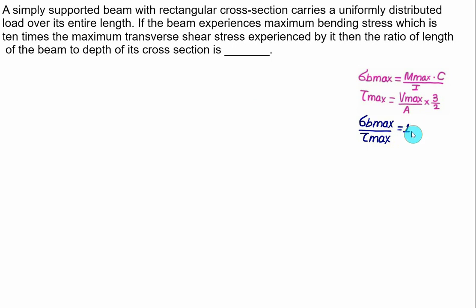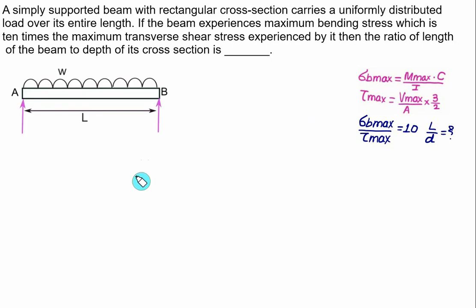This ratio is known and we have to calculate L/D. For a simply supported beam with UDL of span L and intensity W, the reactions at both supports are equal to WL/2.